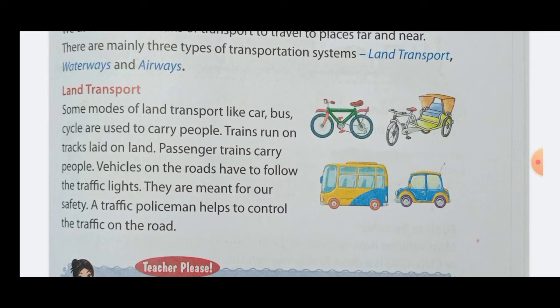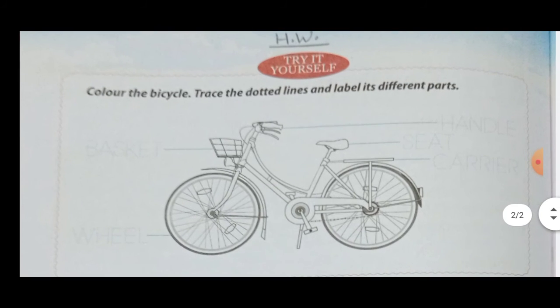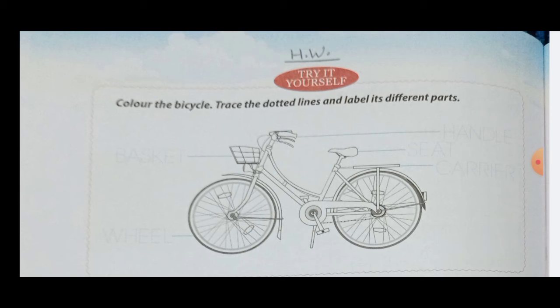Now here is a homework activity for you — try it yourself. In front of you a bicycle is given, and the names of some parts are shown in dotted form. You have to trace these dots to complete the dotted parts, and then color the bicycle.